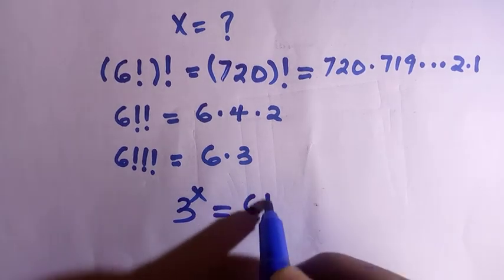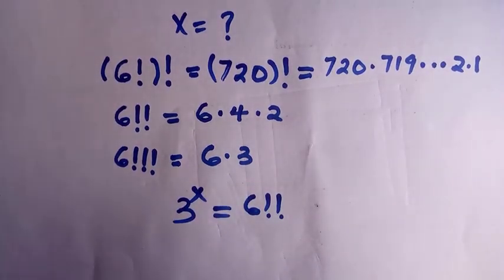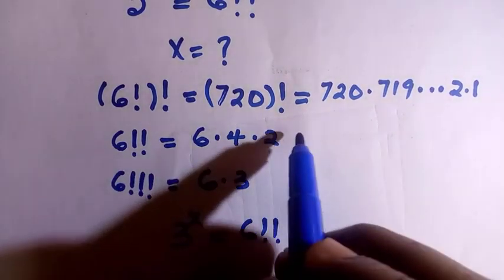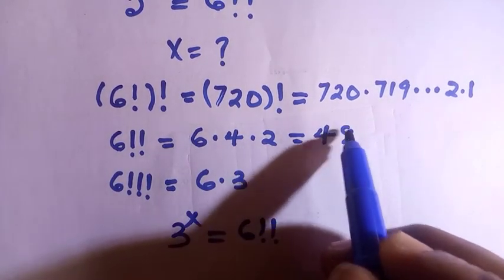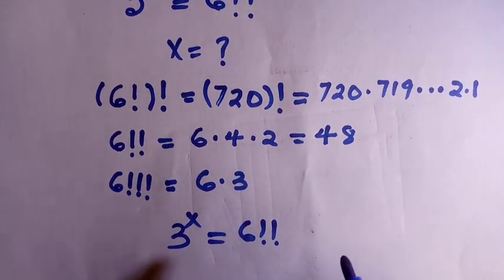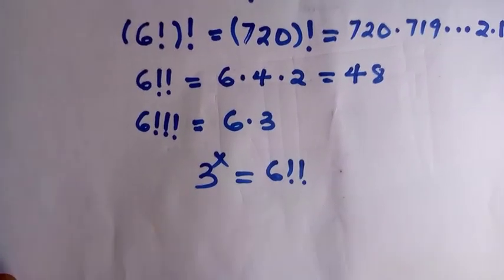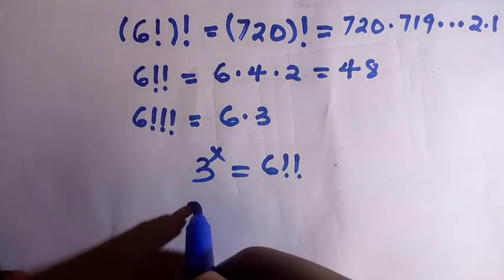The given question is 3 raised to the power x equals to 6 factorial factorial. We have derived this 6 factorial factorial, that is 48, and for this 48, we are going to replace it where we have 6 factorial factorial.